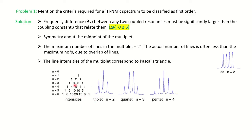The line intensities of the multiplet correspond to Pascal's triangle. When n=0 the intensity is 1; when n=1 it is 1:1; where n is the number of neighboring protons. If n=2 the splitting is a triplet in the ratio 1:2:1. If n=3 the neighboring proton splits as a quartet in the ratio 1:3:3:1. So first order spectra follow Pascal's triangle intensity ratios.